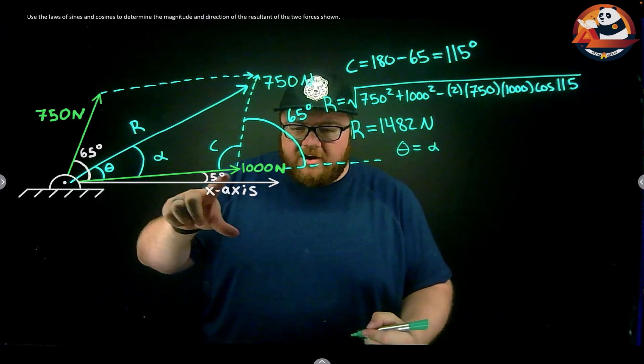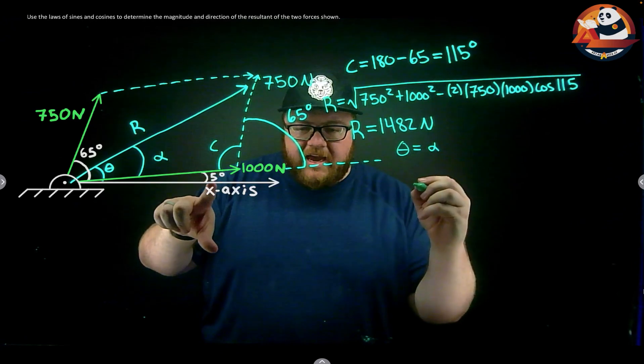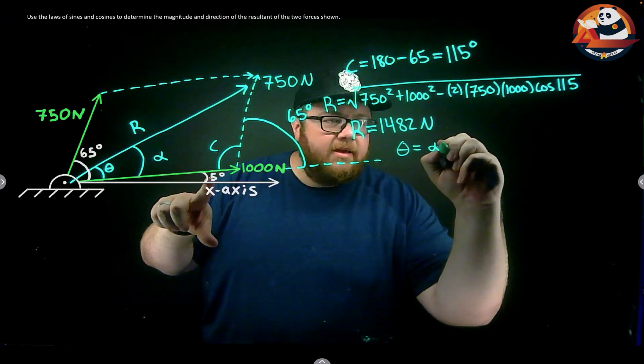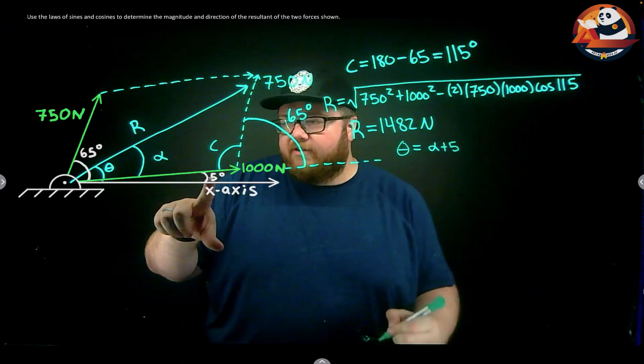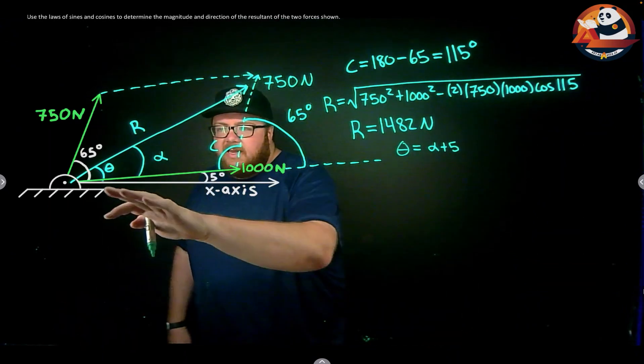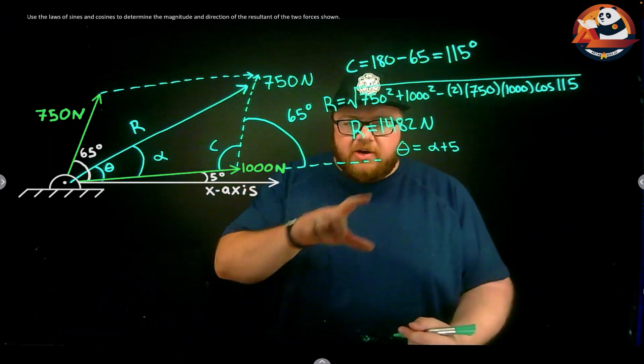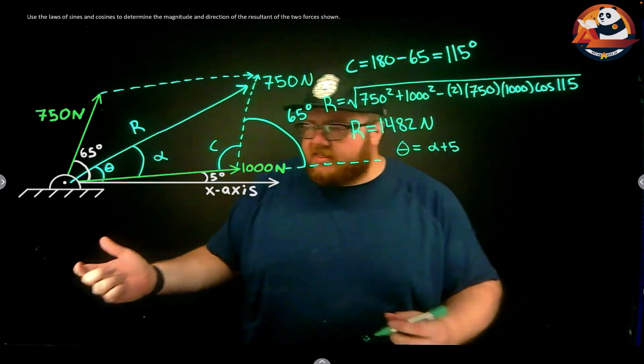Alpha goes from R to 1000. If I get to horizontal, I just need to add in this 5 degree angle right here, so plus 5. Together, then that will give me my angle theta. So I need alpha first.